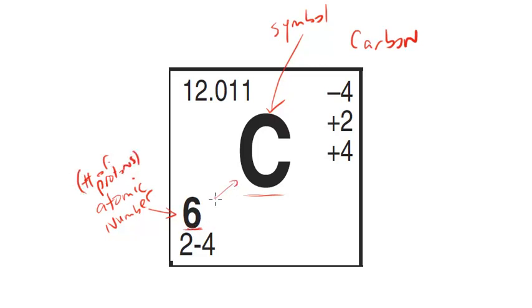It's these two things - this six essentially identifies it as C. It's this six, this atomic number, the number of protons, that pretty much differentiates between elements to a very large extent.